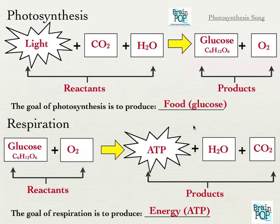Respiration happens in all of our cells constantly. It's why our cells, if they're ever cut off from oxygen, eventually die — that's why you need to breathe constantly; your cells need a constant source of oxygen. You will need to memorize the formula — the equation for both photosynthesis and respiration — and be able to write them both out. That's going to be on Tuesday's class.